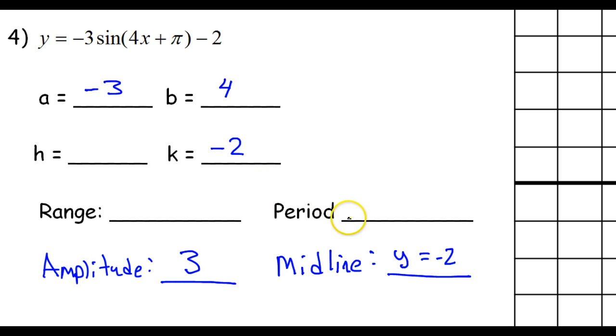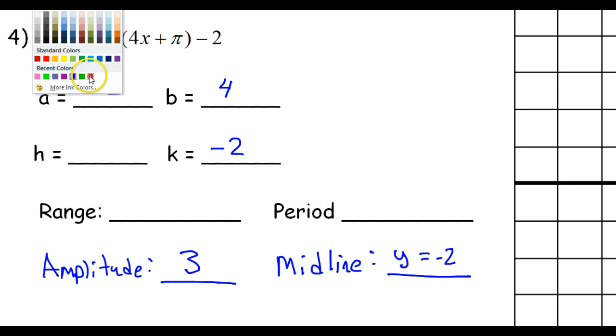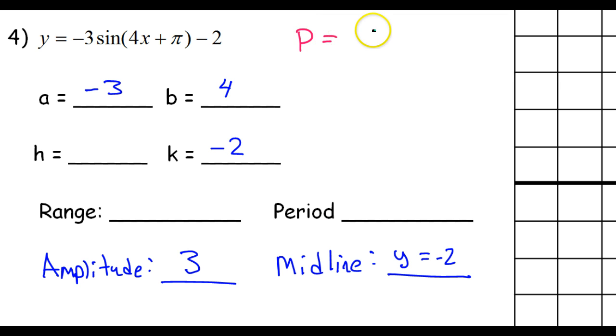Let's talk about the period now. We can calculate the period using the following little formula. It's 2π divided by B. So, in this case, the period is going to be 2π divided by 4. 2 goes into 4 twice, so that means the period is going to equal π over 2. We basically have to reduce.